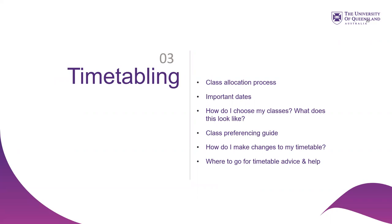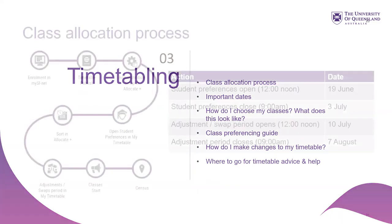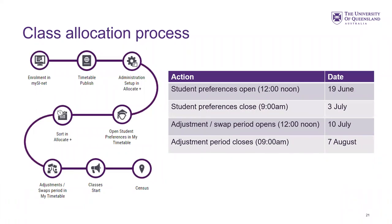Now we'll move on to timetabling. We'll look at the class allocation process, important dates, how to choose your classes, preferencing, making changes to your timetable, and where to go for timetable help. Preferences opened on the 19th of June and will stay open until the 3rd of July. It doesn't matter what time within that window you put your preferences in — this is not first-in-first-served. Everyone puts in their preferences and timetables are generated based on everyone's preferences. Once it closes, it'll be shut for a while and then reopen for the adjustment and swap periods. During adjustment, it's important to get in early, as getting in late may mean you miss out on potential changes. The adjustment period closes on the 7th of August.